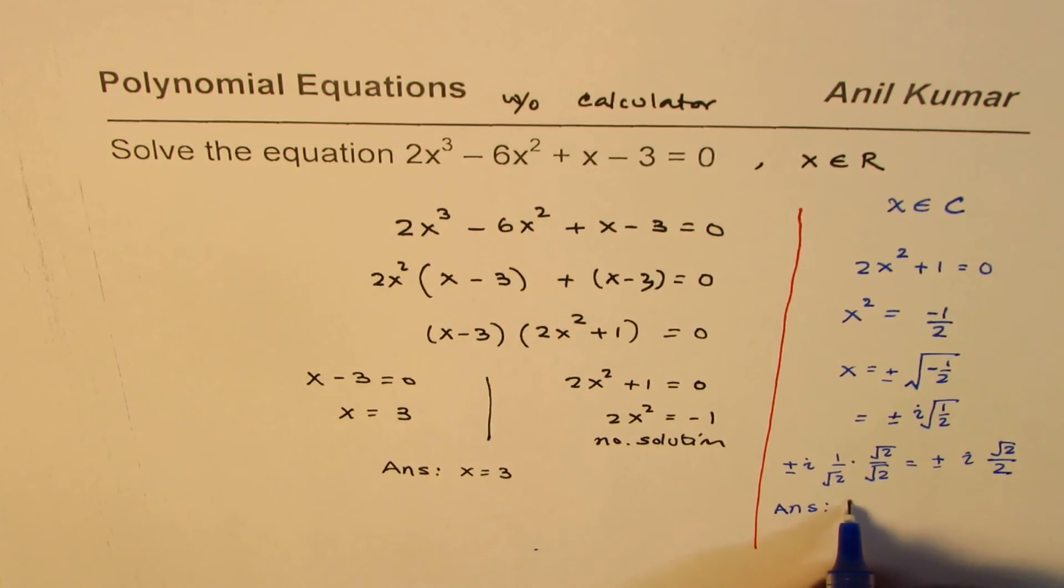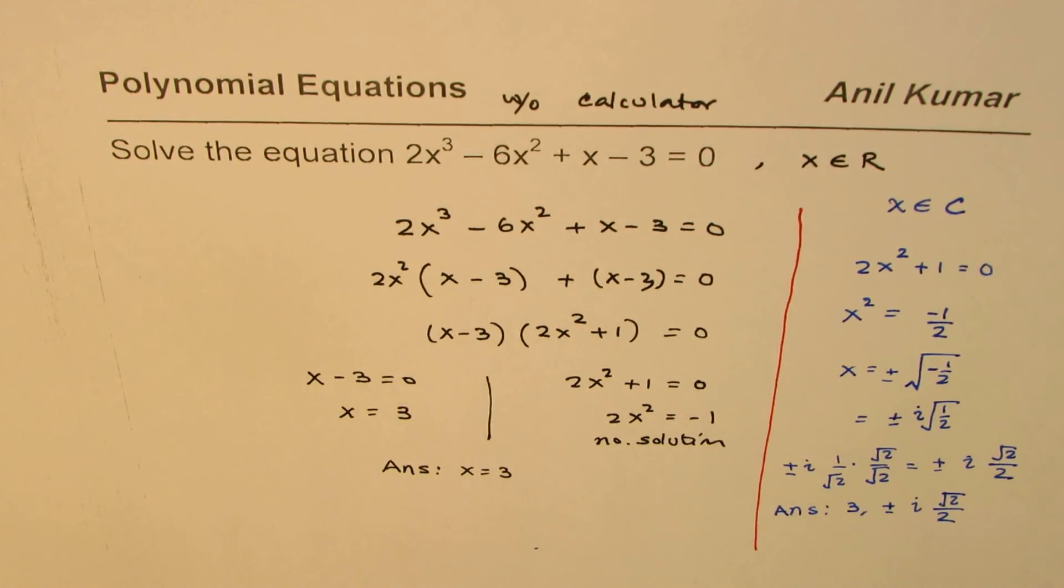So let me write down the answers now. The answers now will be 3, one real answer, and two complex which is plus minus i square root 2 over 2. So these are the three solutions for the given polynomial equation.